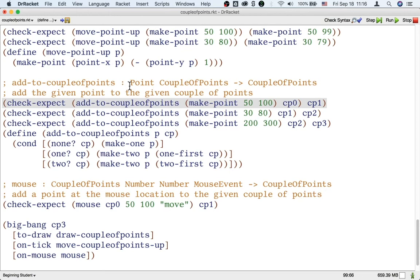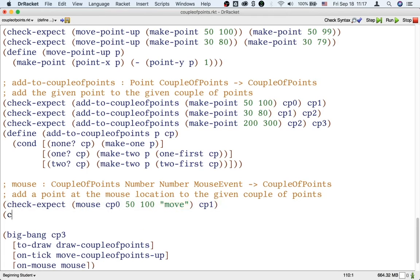So, this is kind of similar to the example we have of add-to-coupleofpoints, but you can see the signature is different. In add-to-coupleofpoints, it's taking a point and a couple of points. That's what the signature says. In mouse, it's taking four inputs. It's taking a couple of points, a number, a number, and a mouse event. So, these two functions are not interchangeable, even though they are kind of similar. And that's why we really need to pay attention to the signature, every function we write and every function we use.